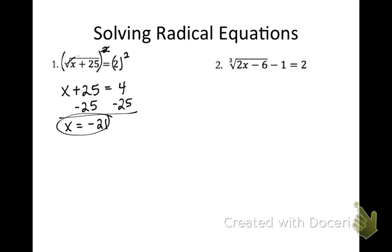Now I need to be sure to check my solutions. So if I plug negative 21 back in, I get negative 21 plus 25 in the radical, so I get the square root of 4, which is equal to 2.